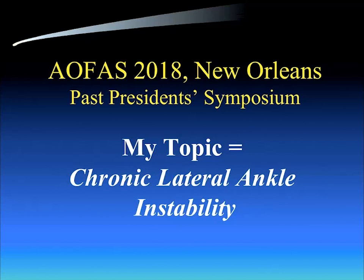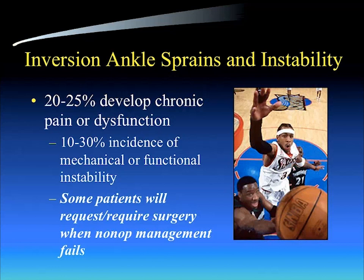My topic was chronic lateral ankle instability. As you all know, inversion ankle sprains occur very commonly. In the United States, there's one for every second of the day, and most of those are in recreational sports. Some of those inversion ankle sprains can lead to chronic instability. About 20% to 25% of individuals suffering an inversion ankle sprain will develop chronic pain or dysfunction.